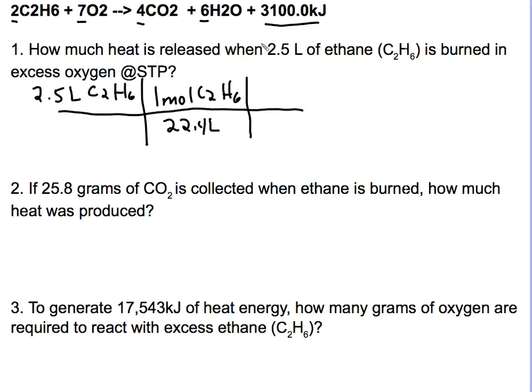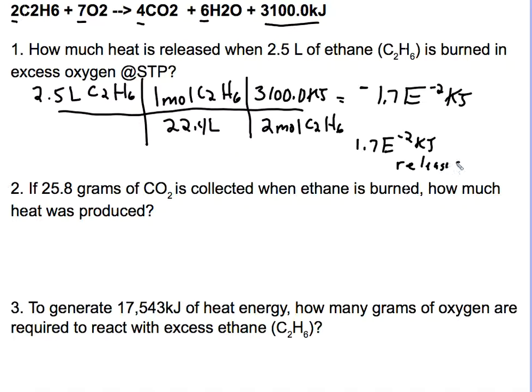Then the new step is we're going to use the energy in relationship with the moles. So the problem, the balanced equation shows that for every two moles of this ethane that burns, you're going to get 3100 kilojoules. If you do the math for that, I believe it equals something like 1.7E-2 kilojoules. Now that's how much is released. You could put a negative number there, just showing that that energy is going out. Or you could write 1.7E-2 kilojoules would be released to the surroundings when this burns.